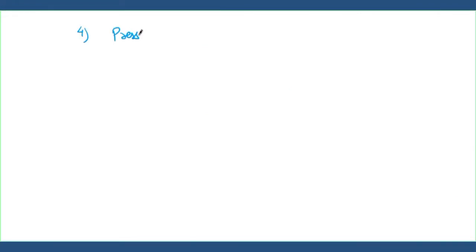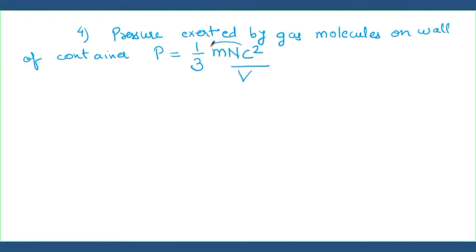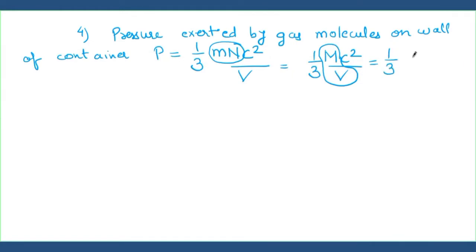Next point: the pressure exerted by gas molecules on the walls of a container. This is P = (1/3) × m × N × C² / V. Taking M×N as the total mass of the gas, this becomes (1/3) × M × C² / V. Taking mass upon volume as density of gas (ρ), this simplifies to P = (1/3) × ρ × C², where C² represents the mean square velocities.